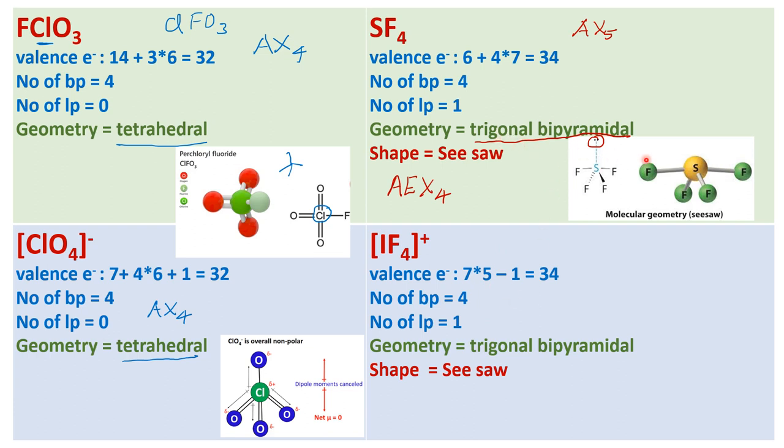Similarly, when we talk about IF4 plus, here also it is quite similar as that of SF4. Because it is the same as that of SF4, the geometry is trigonal bipyramidal and the shape will be seesaw shape. IF4 plus has the seesaw geometry.